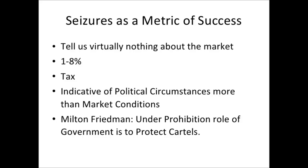One of the last points is this notion of seizures as a metric of success. Seizures tell us utterly nothing about what's going on in the market. The top estimates are that government seizes maybe 8% of what comes through; the lower end is 1%. Corporation tax in the UK is 24% — it's a fraction of even that. Seizures are indicative of political circumstances more than market conditions. What we see in the newspapers — 200 kilos of heroin seized in the UK, a cartel member arrested — is really about local-level politics: whether this person was paying the right police officers, or whether a competitor wanted to push them out of the market and provided information to the police.